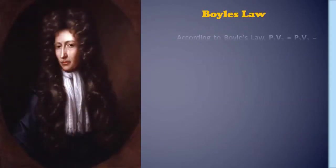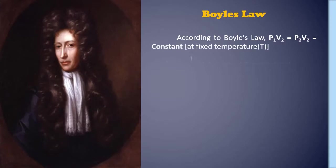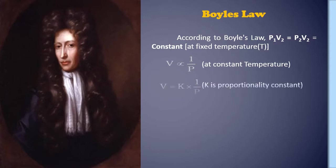If V is the volume of a certain mass of gas under pressure P at constant temperature, according to Boyle's law, V is inversely proportional to P at constant temperature. Therefore, V is equal to K into 1 over P, where K is proportionality constant. Therefore, PV is equal to K.